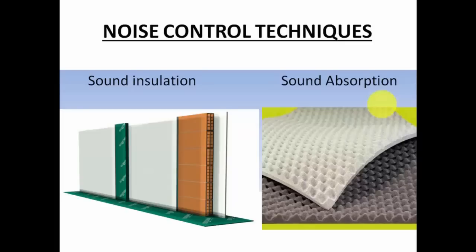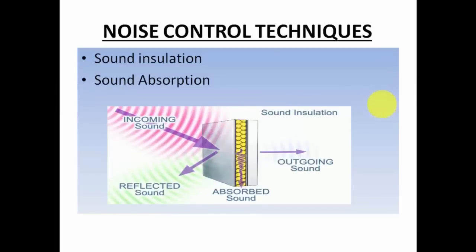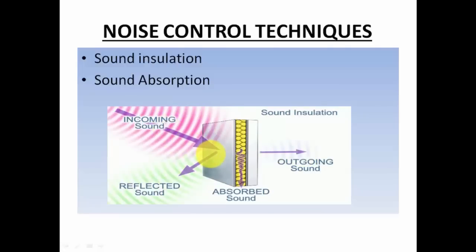On the other hand, sound absorption means introducing some kind of absorbent material into the room so that the acoustics of the room can be altered in order to reduce the noise. There is a slight difference between the two techniques. With sound absorption, the absorbent material placed between two walls absorbs the incoming sound, so the outgoing sound will be much less compared to the incoming sound. With sound insulation, the incoming sound is reflected by the material rather than absorbed.